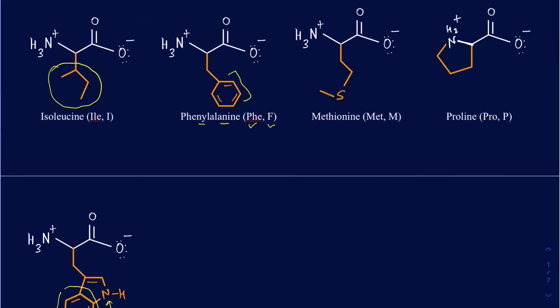Proline is the only amino acid that's going to have the sidechain linked to the amine. As a result, it's going to be found in a ring form. Due to proline being in a ring form, it's going to have the most restriction in terms of movement. The rest of the amino acids are free to move around through single bond rotation, but proline is one that's going to have very restricted movement.